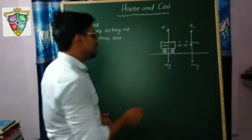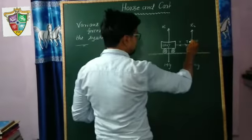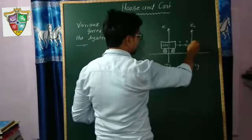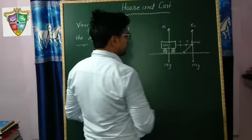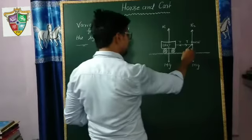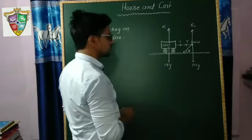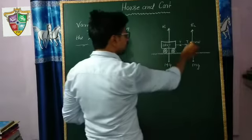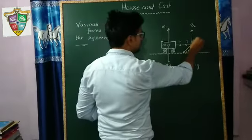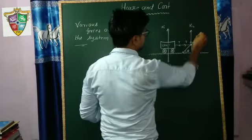Students, when the horse tends to move forward, it applies force on the ground like this, making the angle theta. This is the applied force by the horse. And if we take the reaction of this force by the ground, this is the reaction of the ground, say this is R.